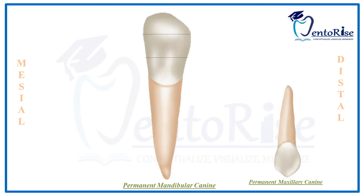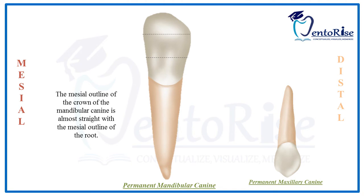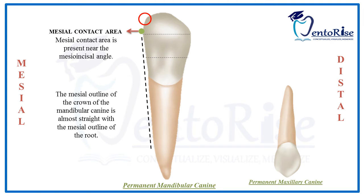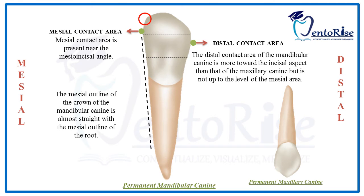The outlines of a permanent mandibular canine from the labial aspect show that the mesial outline of the crown is almost straight, continuous with the mesial outline of the root, and so is the distal outline. The mesial contact area is present near the mesio-incisal angle. The distal contact area is more towards the incisal aspect than that of the maxillary canine, but not at the same level as the mesial contact area. Please observe the figure carefully and compare it with the contact areas of the maxillary canine.